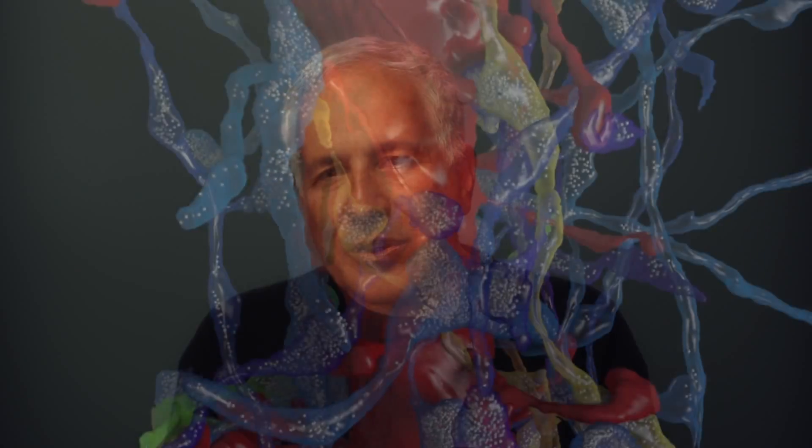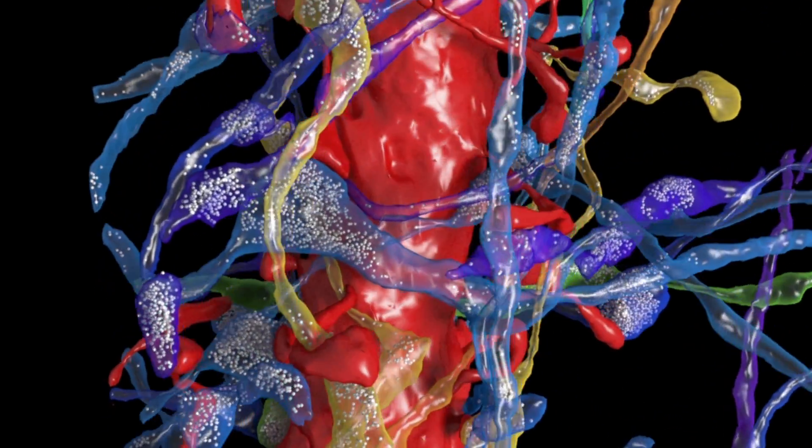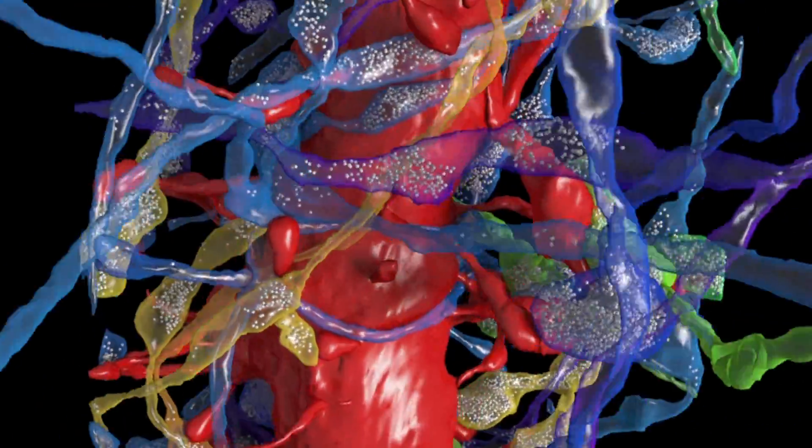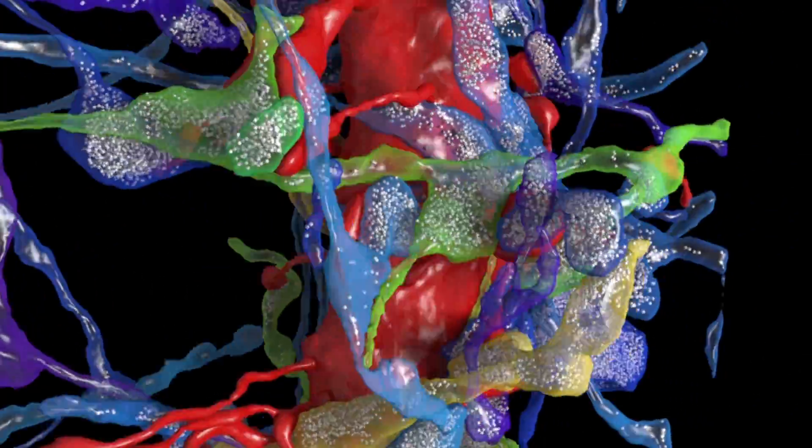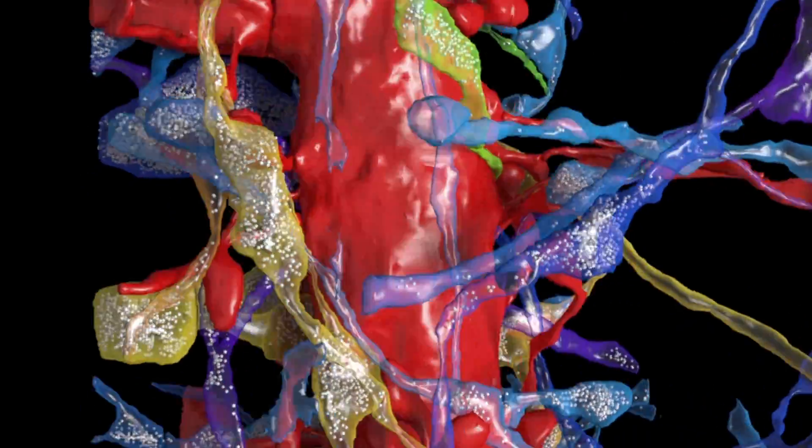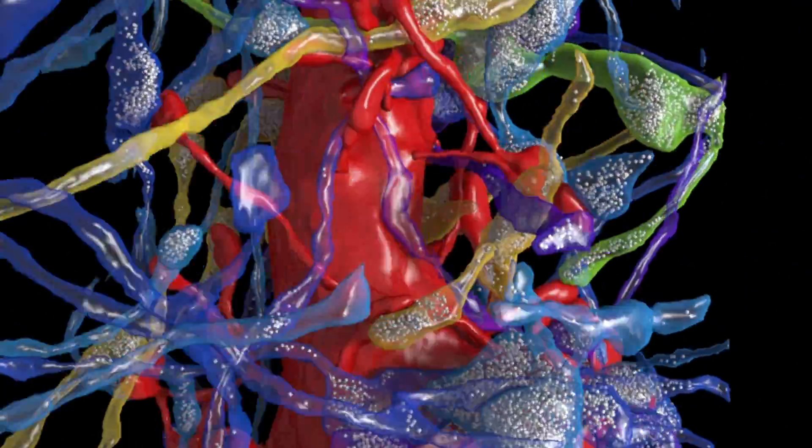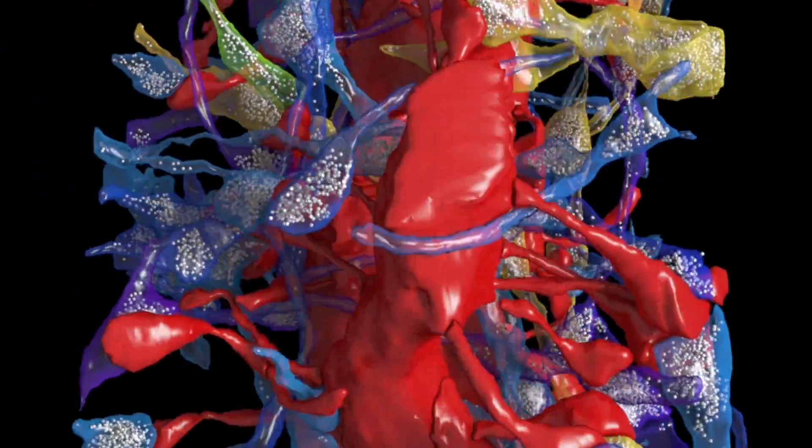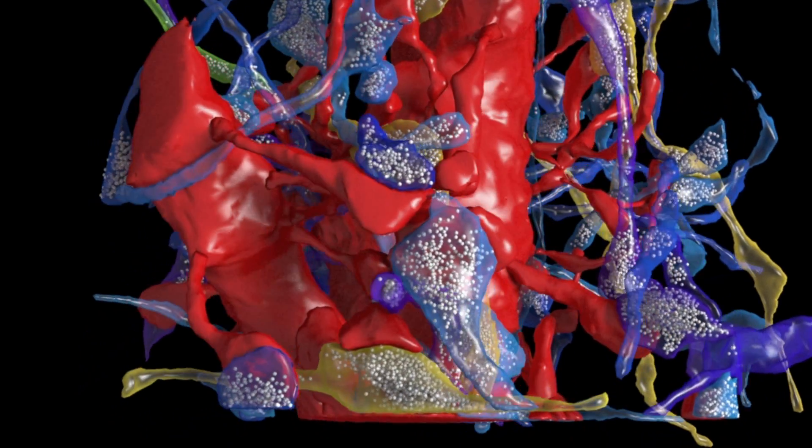The significance of this work, especially the question of the non-random relation between axons and dendrites, is that there are properties in the identity of axons and dendrites that cause them to connect with each other that go beyond simply where they're located in the tissue.